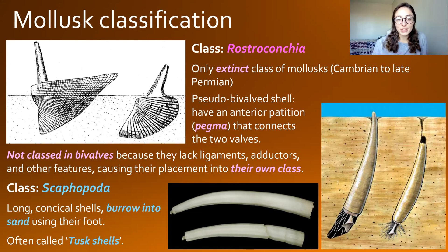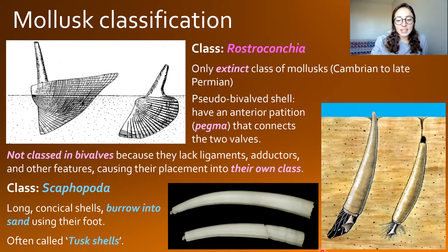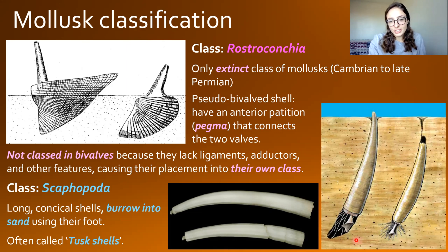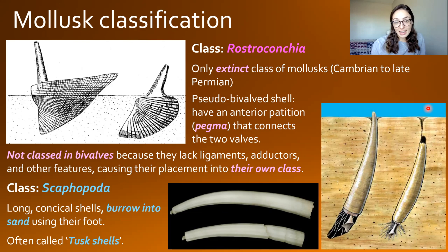Additionally, we have Scaphopoda, the tusk shells. These obviously look like tusks, and they're very aptly named. They burrow into the sand with their foot and tentacles, and their long conical shells help them reach the surface so they can continue to catch prey in the sediment and excrete waste. That is all for the classes of mollusks that do not include bivalves, gastropods, and cephalopods.